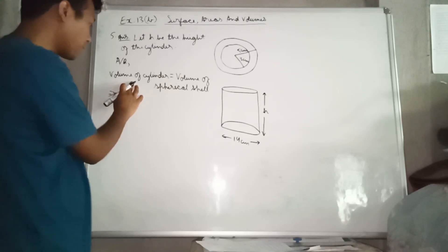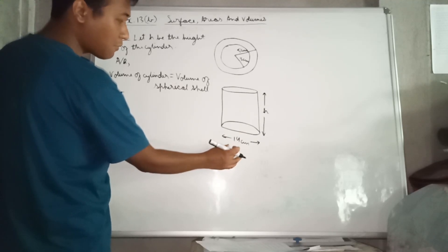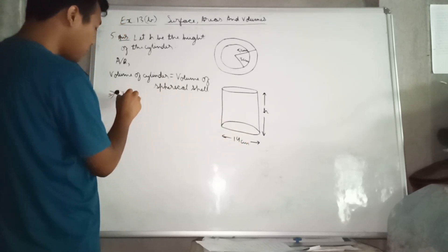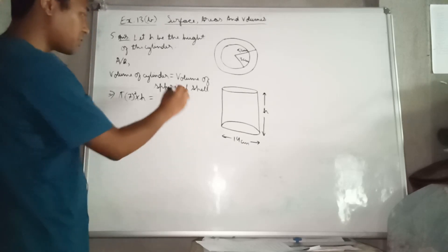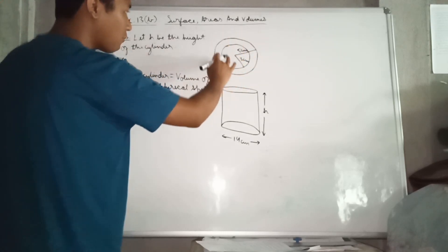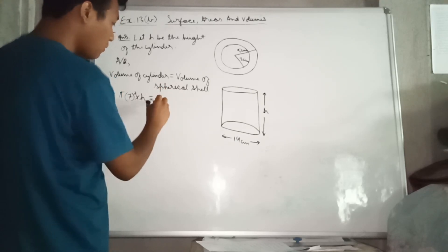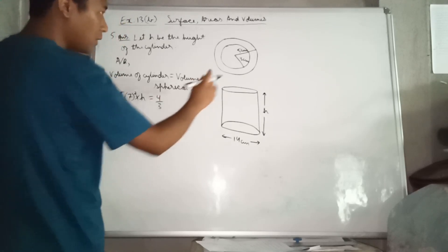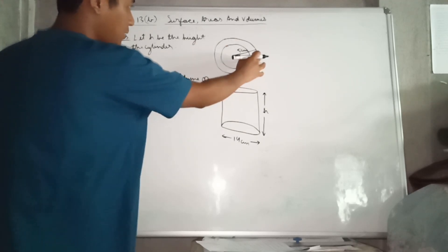Volume of cylinder formula: π r² h. The diameter of the cylinder is 14 cm, so radius = 7 cm. Therefore we have π × 7² × h. For the spherical shell, external volume = (4/3) π r³, with external radius = 5 cm.